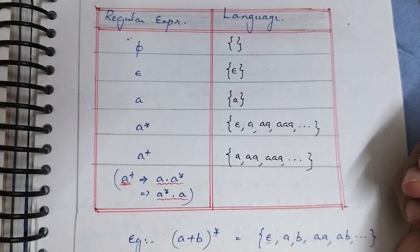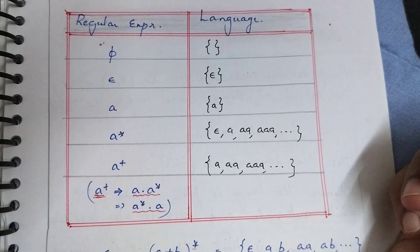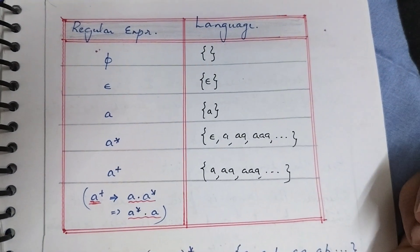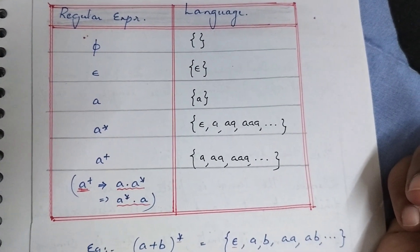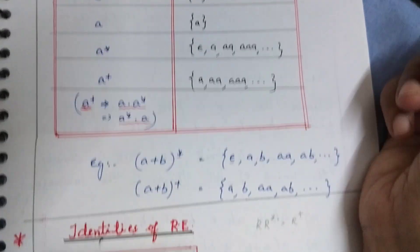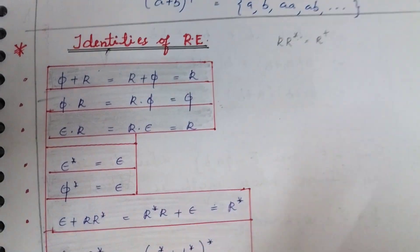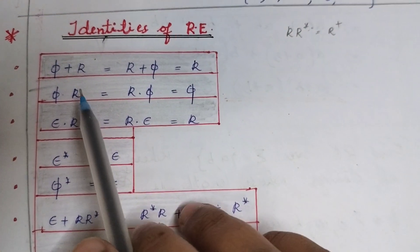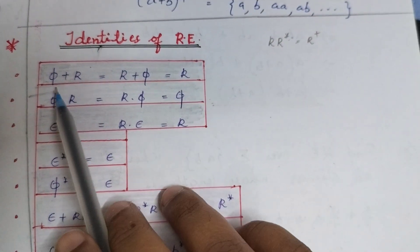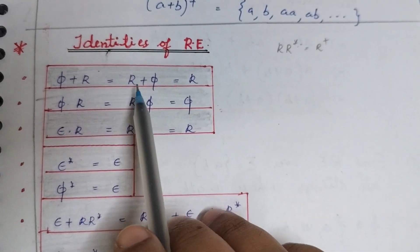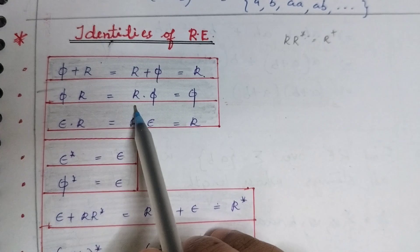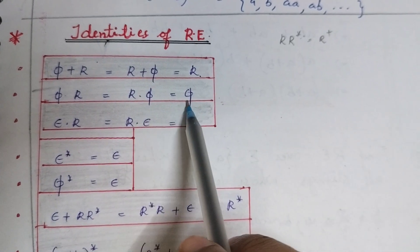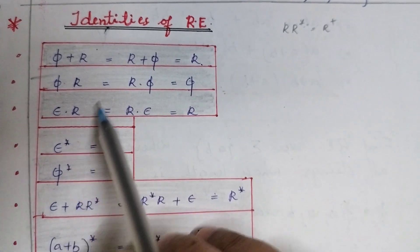This is the introduction to regular expressions. There are also some identities you need to study: phi + R = R + phi = R; phi · R = R · phi = phi; and other similar identities.